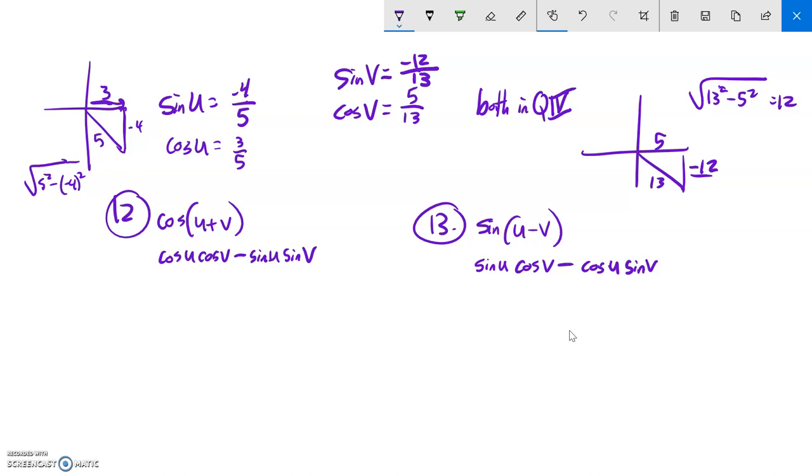Great, so now I have all my pieces that I need. Now I can substitute them in to get the values for this. So cosine of u is three-fifths, cosine of v is five-thirteenths, sine of u is negative four-fifths, sine of v is negative twelve-thirteenths. And then I can just do some arithmetic. This would be 15 over 65 minus a negative times a negative is positive, so that's 48 over 65. And then if I go 15 minus 48, I get negative 33. So the cosine value of them added together is negative thirty-three sixty-fifths.